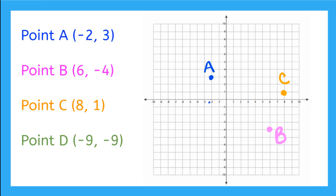Okay, lastly, I have point D. It says negative 9, negative 9. So both my x-coordinate and my y-coordinate are negative — that gives me a hint. I know negative x, negative y means I'm here in quadrant 3. So negative 9 on my x-axis from my origin. I find negative 9 right here, and now I have to go down on my y-axis until I hit negative 9. Right here. I make my mark and label my point — point D.